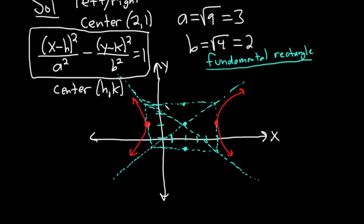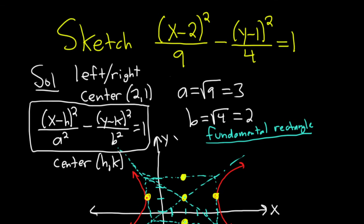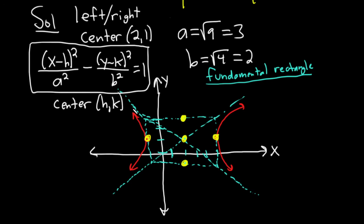The most important thing for most people is getting these key points right — the center, the vertices, and the b-points. If you get these points right, whether you're taking a class in college or high school, you're probably going to be okay. Most people aren't nitpicky about the intercepts. If these points are good, you have the main idea. Kind of a fun problem — good luck.